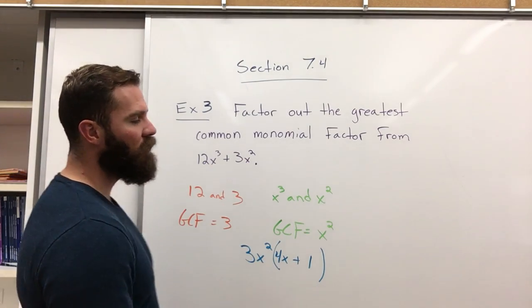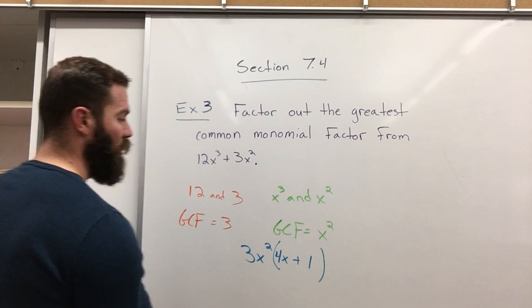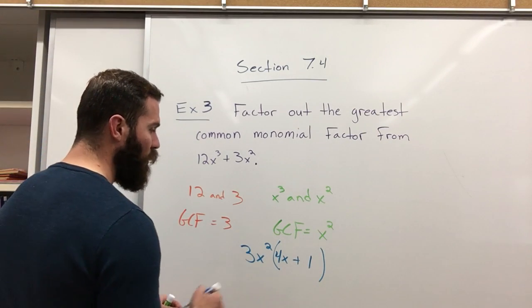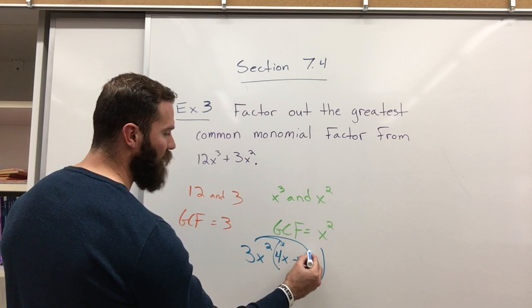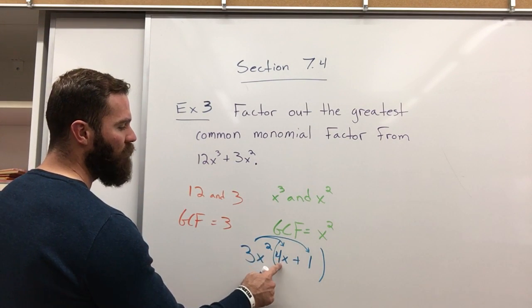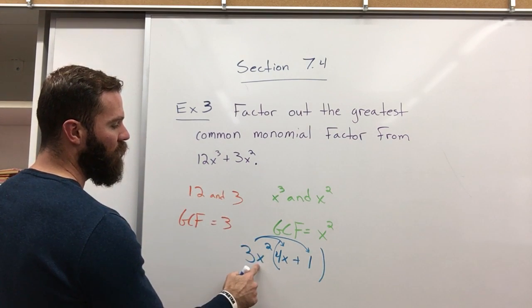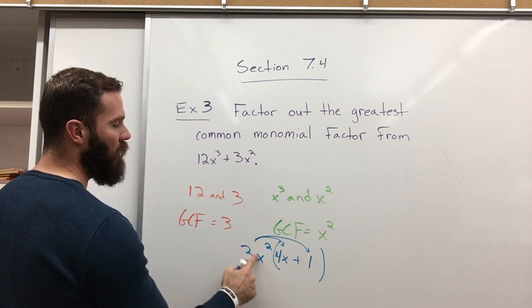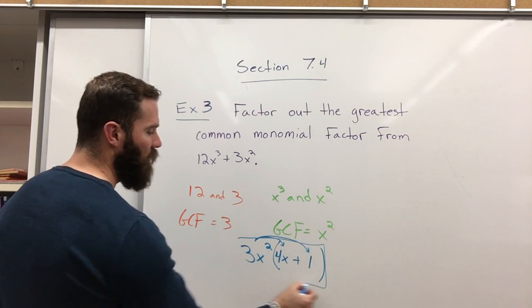This is probably where you're going to get to some of the tricky stuff when you get to factoring. And you need to check your work. All you have to do is do the distributive property, which we practiced quite a bit. 3x squared times 4x is 12x cubed. 3x squared times 1 is 3x squared. This is our answer.